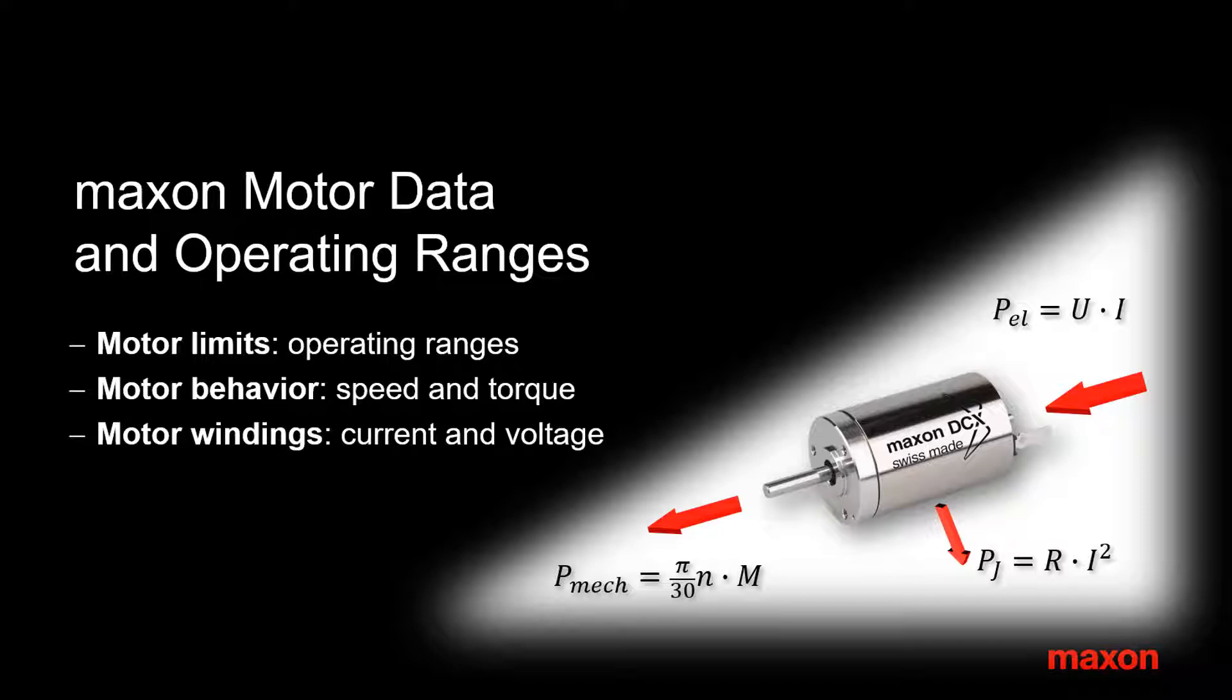Essentially, a motor is an energy converter transforming electrical power, its current I and applied voltage U, into mechanical power given a speed N and torque M. We have a closer look at this power transformation and its limitations.